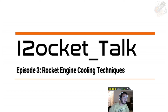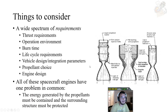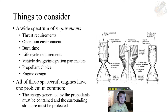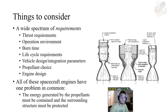There are some very important things to consider when choosing which cooling technique to use for your rocket engine. There's a wide spectrum of requirements, including how much thrust your engine is supposed to output, the operating environment — whether it's an atmospheric or vacuum engine — and your burn time and life cycle requirements. Is it supposed to be reused, or is it a first-stage engine that only has to burn once for around a hundred seconds versus a vacuum engine that might burn for minutes at a time? That will change the heat load on your nozzle and thrust chamber.